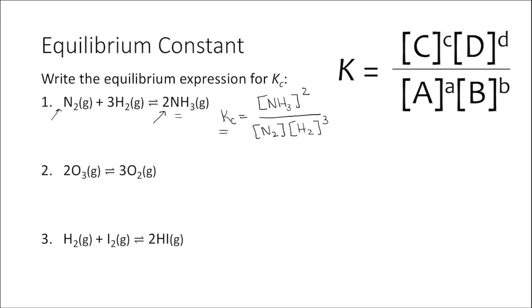This next chemical reaction is the conversion of ozone to molecular oxygen. K sub C is equal to the concentration of the product O2, raised to the power of its coefficient — so O2 cubed — divided by the concentration of the reactant O3 raised to the power of its coefficient from the balanced chemical equation, so O3 squared.